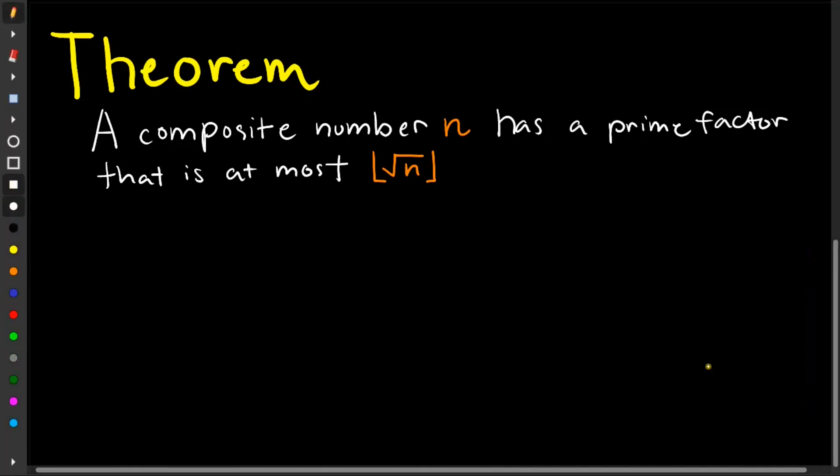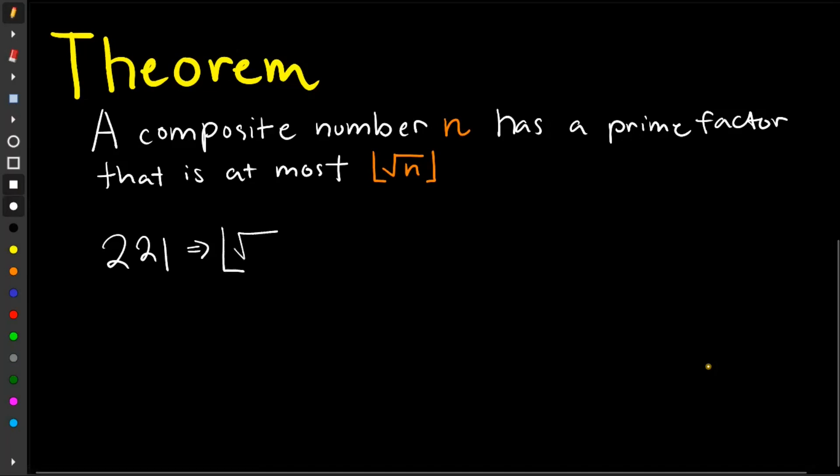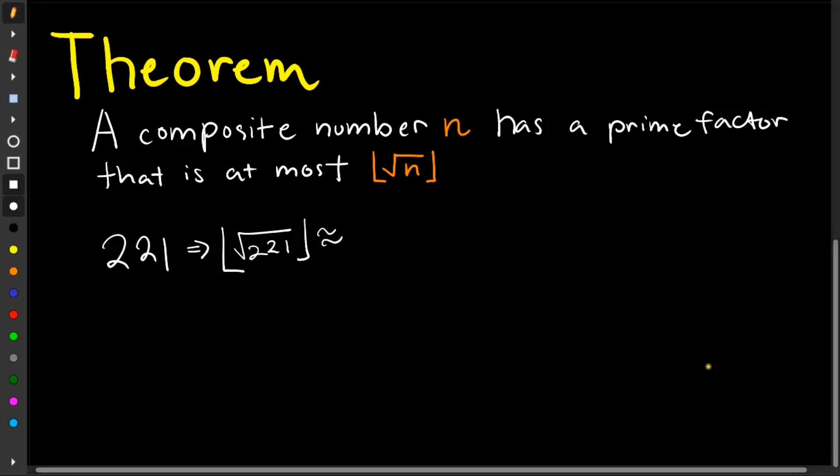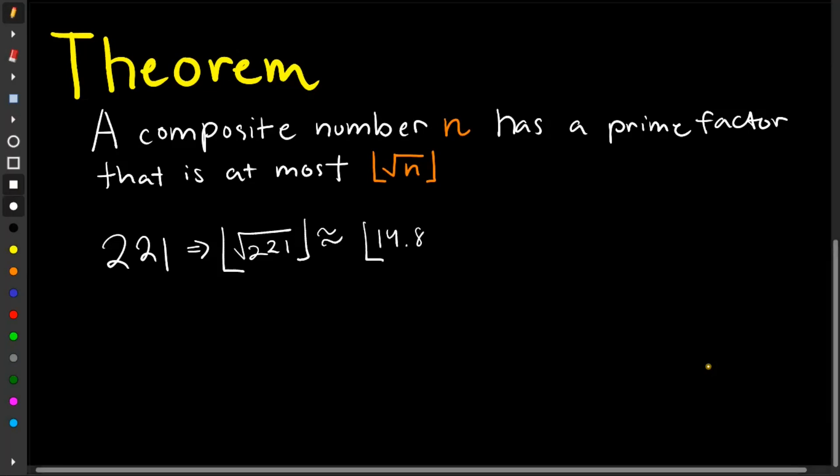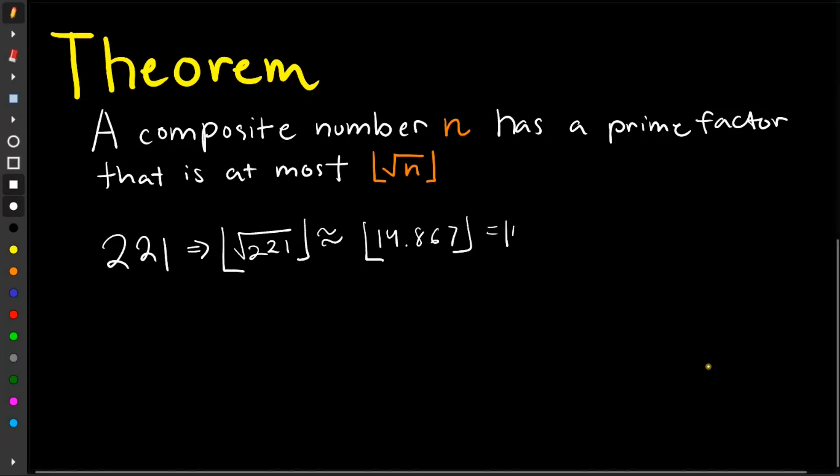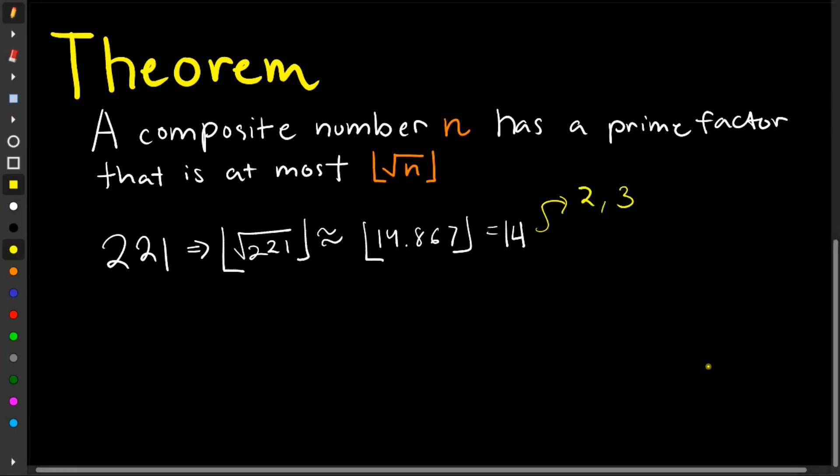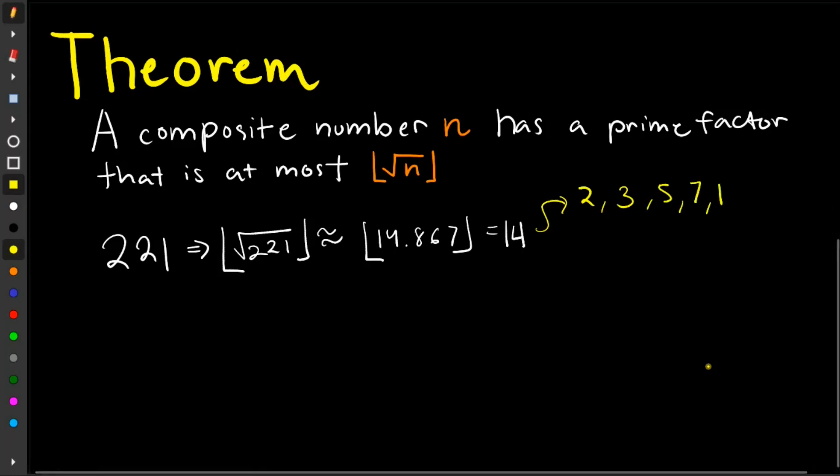Let's try 221. So applying this one, we have the floor of the square root of 221. This is approximately 14.867, which is equal to 14. So we check the factors 2, 3, 5, 7, 11, 13, and that's it.